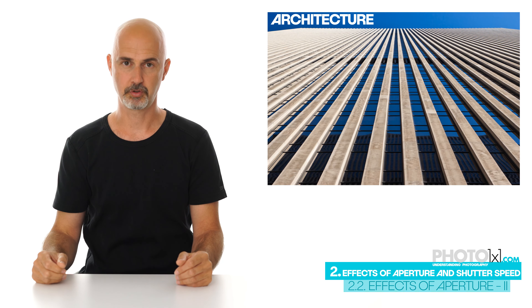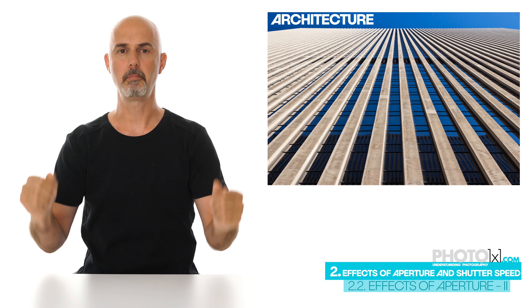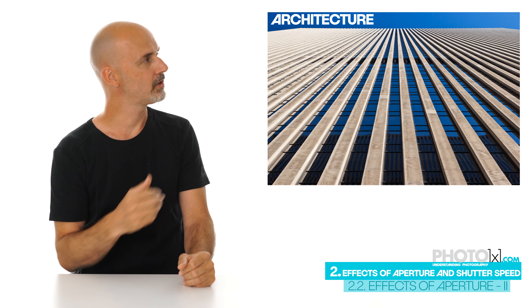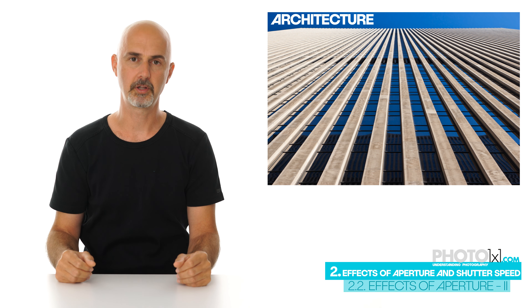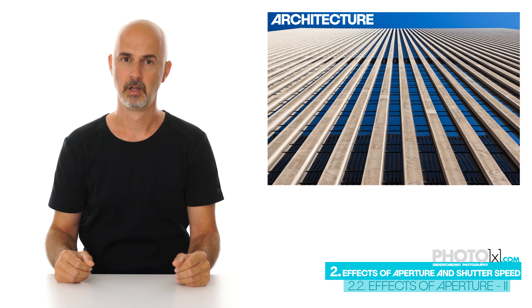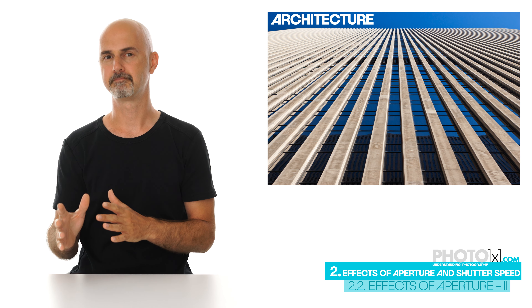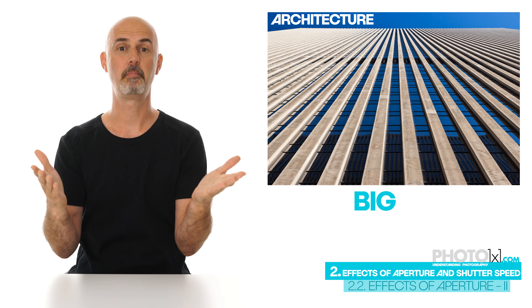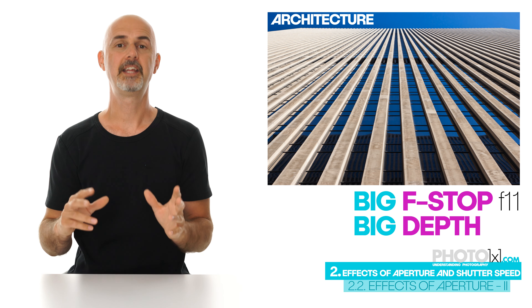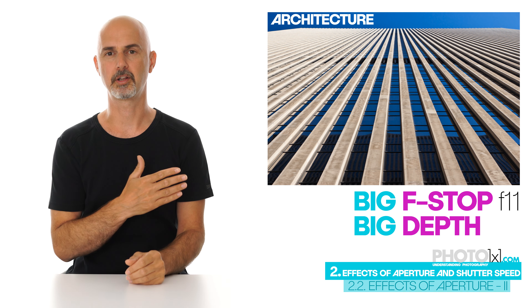And that brings us to the second example: architecture photography. You are shooting up on a building. You want the windows in front to be sharp, and of course you want the top of the building to be sharp too. Remember our experiment from the last movie — what would you choose? Correct! A big f-stop. Again, f-11 is a very good setting for a wide angle shot like this.